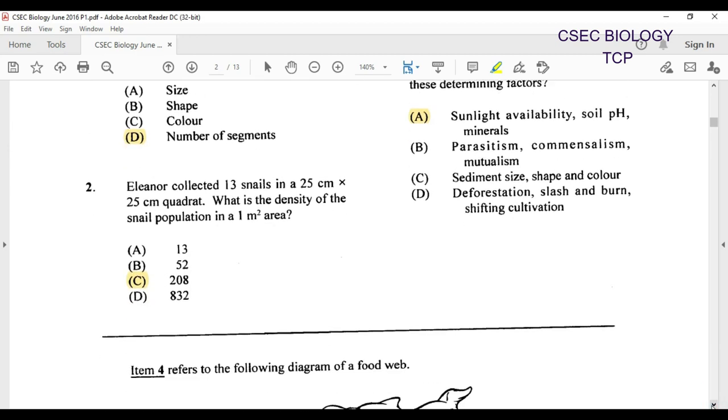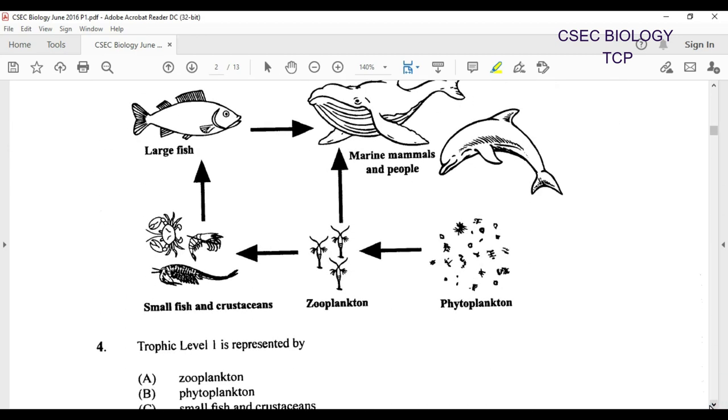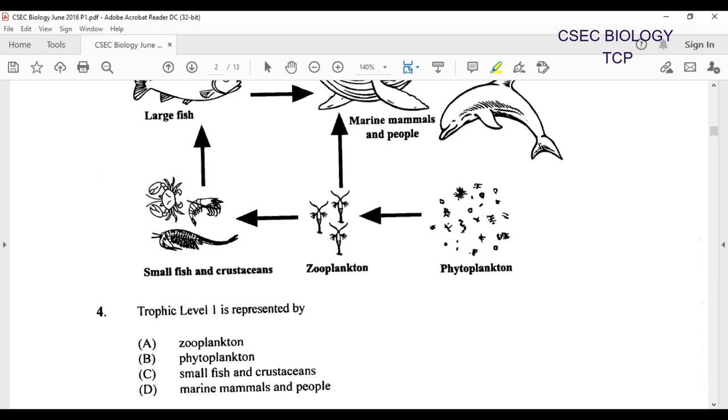We move on to question number four. Question number four looks at a food web, which is usually a number of food chains. Usually it begins with an autotrophic organism. Here we're required to identify the trophic level, that is trophic level 1. Which organism pretty much represents trophic level 1? If we look here we are seeing phytoplankton, which are somewhat microscopic plants usually found in water, and zooplankton, those are microscopic animals also found in water. If we remember trophic level 1, that's where we're going to find the producer. So the autotrophic organism here, phytoplankton, is definitely going to be our answer.